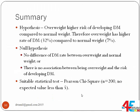In summary, here we have the scenario and hypothesis: we believe overweight individuals have a higher risk of developing diabetes mellitus compared to normal weight individuals. The overweight group has a higher rate of 32% versus 7%. The null hypothesis is either no difference in diabetes mellitus rate between groups, or no association between being overweight and the risk of developing diabetes mellitus. The suitable statistical test is Pearson's Chi-square, because the total sample was 200 and no expected value was less than 5.